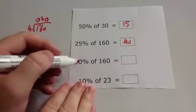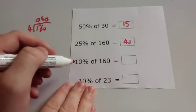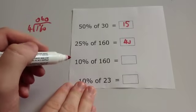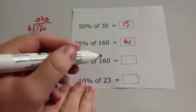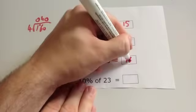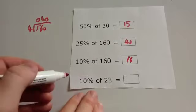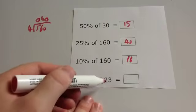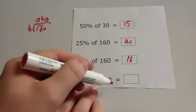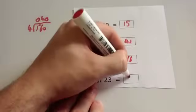Next one. 10% of 160. To get 10%, you divide by 10. So you do 160 divided by 10, you can just take off the 0. It's going to be 16. And finally, 10% of 23. Well you want to do 23 divided by 10, so you want to move the decimal place once to give you 2.3.